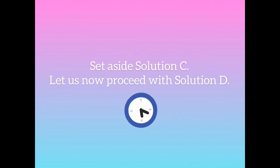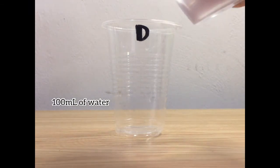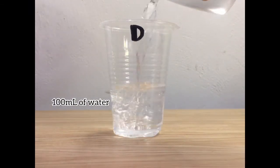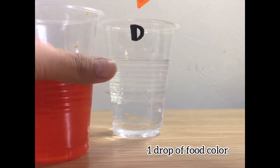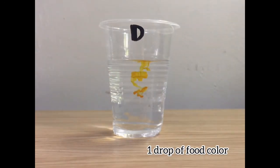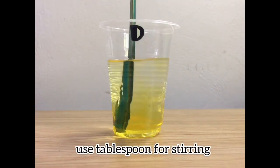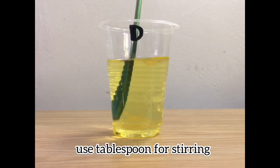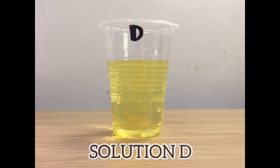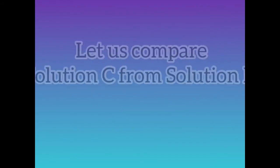Now that we are done with solution C, let us now prepare our last solution, which is solution D. For cup D, let us put 100 ml of water. After that, add 1 drop of food color. The food color is starting to disperse. Again, stir the liquid until all food color is dissolved in water. This is the solution D.